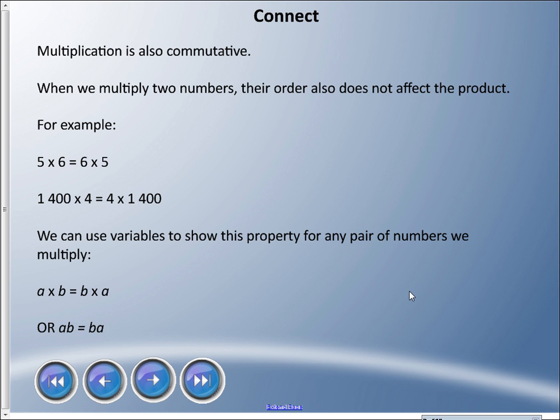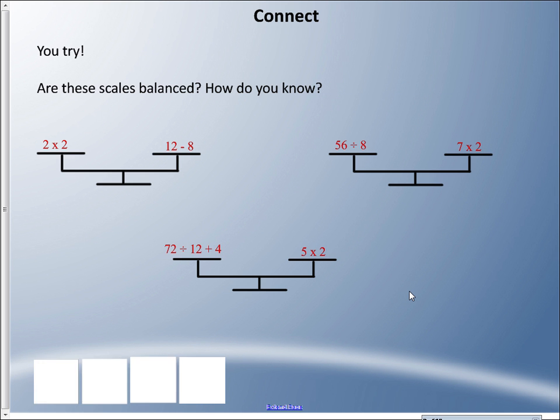Again, we can use variables to show this property for any pair of numbers we multiply. So a times b equals b times a, or if you remember from before, we just write ab equals ba because that times sign does look like an x.